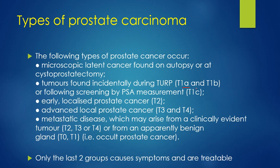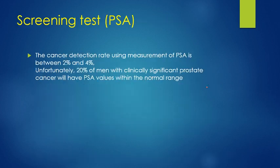The tumor in T1a and T1b stage is found incidentally during TURP, while T1c stage is found by PSA measurement. Localized prostate cancer is in the T2 stage, and advanced local prostate cancer is T3 and T4. The T3 and T4 stages cause symptoms and are treatable, while T2, T1c, T1b, and T1a don't cause symptoms, so they are not treated.